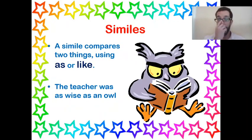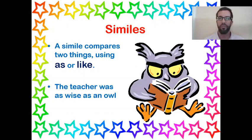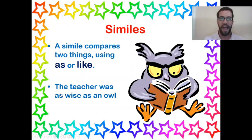So similes — a simile compares two things and it uses the words 'as' or 'like,' and that's really important. My first example: there is a picture of an owl. 'The teacher was as wise as an owl,' because in most stories owls are seen as quite wise creatures, something to do with their eyes — they come across as looking quite clever. So that's a good simile, and you can notice it's a simile because you can see it's got the word 'as' in it.